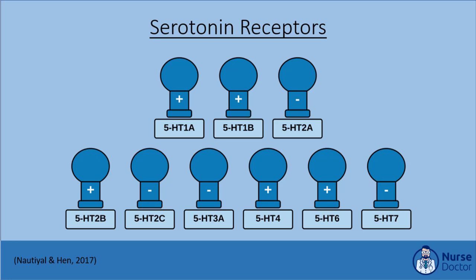Of the 14 serotonin receptor subtypes, probably the most studied are 5-HT1A, 5-HT1B, and 5-HT2A. Polymorphism of the 5-HT1A receptor translates to an increased risk of depression due to altered receptor expression and reduced responsiveness to antidepressive treatments. The 5-HT1B receptor is best known for its role in regulating aggressive and impulsive behavior, but also plays a role in modulating depression. The 5-HT1B receptor is less responsive in depressed patients, suggesting reduced expression or desensitization.